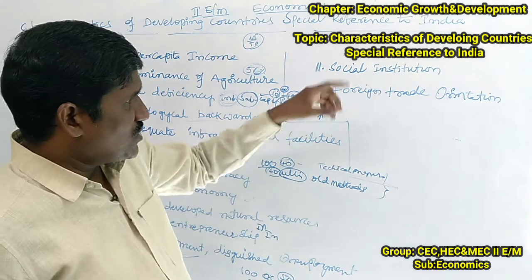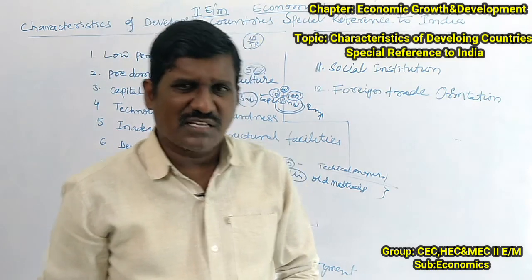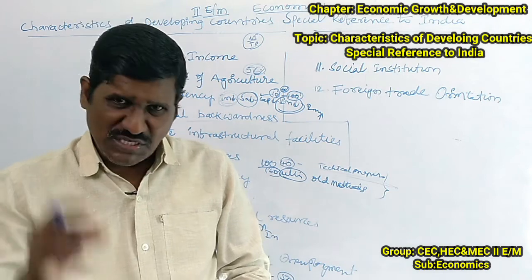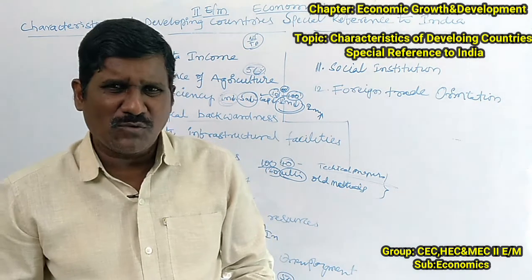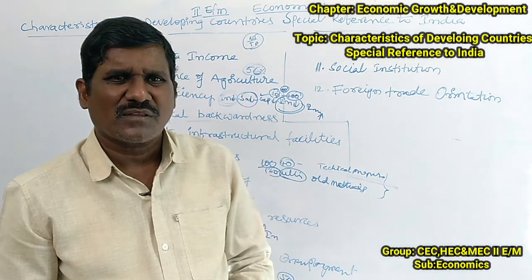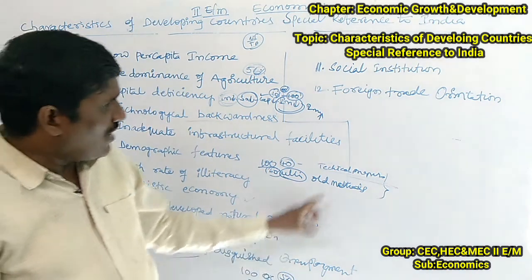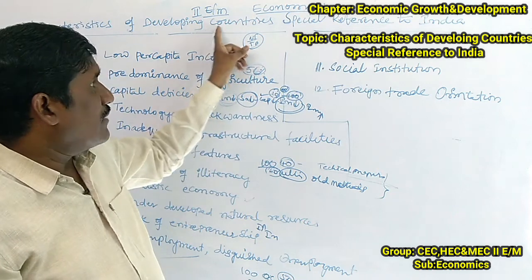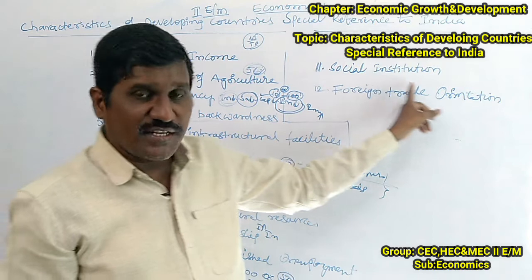The eleventh feature is social institutions. Traditions, casteism, sub-castes, social ceremonies, the psychology and attitude of the people, old methods, illiteracy, and old approaches of the people — these are all causes that keep developing countries including India from advancing. These social institutions are a characteristic feature with special reference to India.